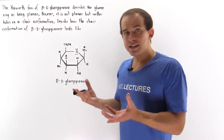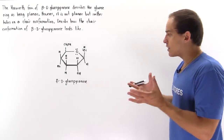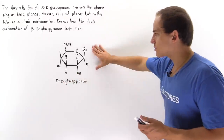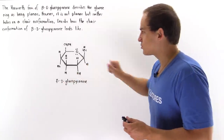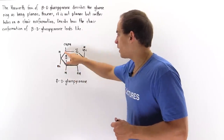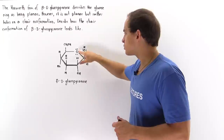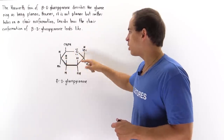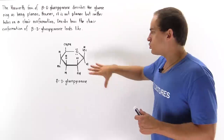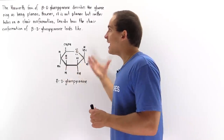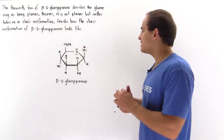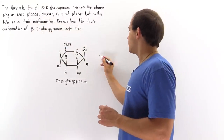In nature, the actual diagram that describes beta-D glucopyranose doesn't actually look like the Haworth form, because that describes a planar molecule on which these six atoms — one oxygen and five carbons — basically lie along the same plane. To transform this planar molecule into its chair conformation, we basically have to flip our molecule.